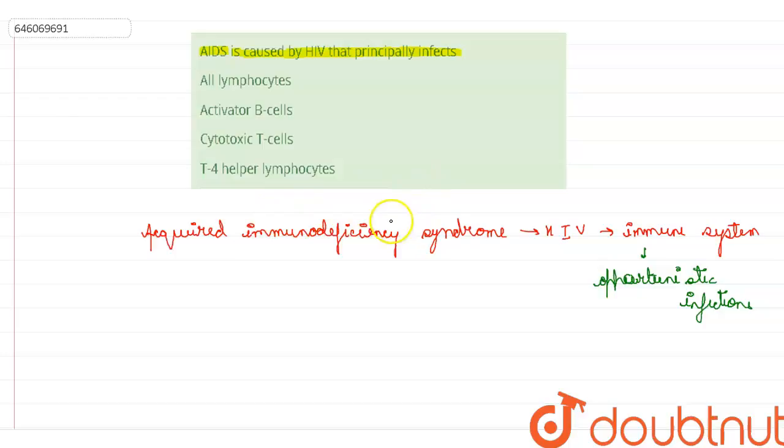If you talk about this AIDS, it affects a type of cell. Primarily, it affects one type of cell that is known as helper T cells. It primarily affects this helper T cells.